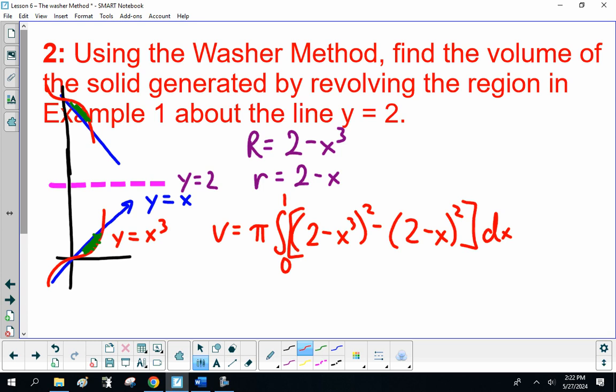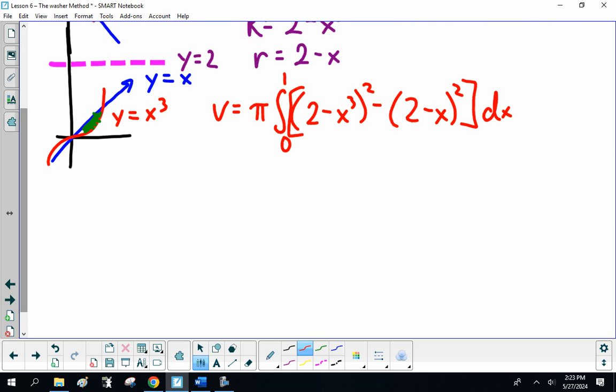Now. So, you have to foil that out. So, volume is π times the integral from 0 to 1. This is, let me see now, I'm going to be 4 - 4x³ + x⁶ minus [4 - 4x + x²].